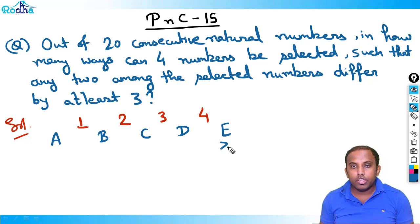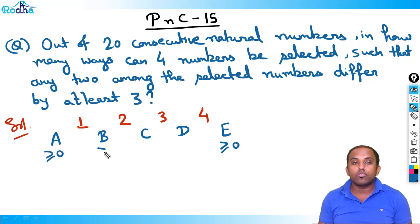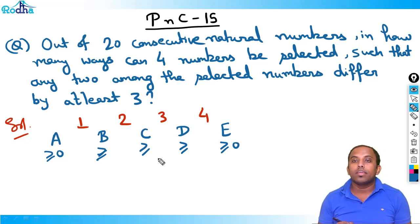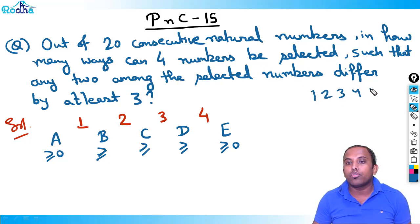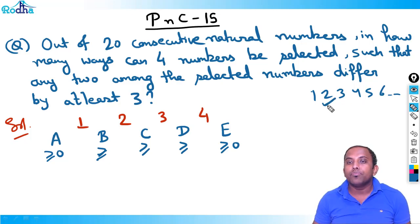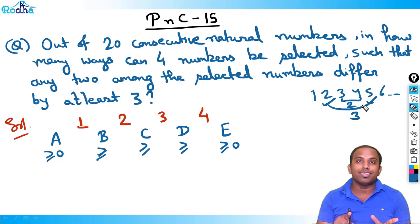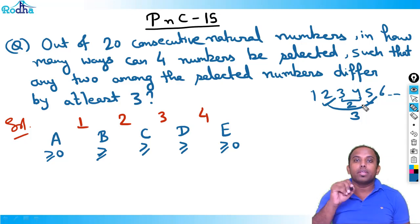Now what restrictions do I put here? Don't put a restriction of three on b, c, and d — this is the mistake you can make in this question. Because if you have to select four numbers that differ by at least three, and if numbers are like 1, 2, 3, 4, 5, 6 — numbers differing by three means if you pick number 2, the next number you pick is 5. So numbers differ by three, but the gap is of two, not three.